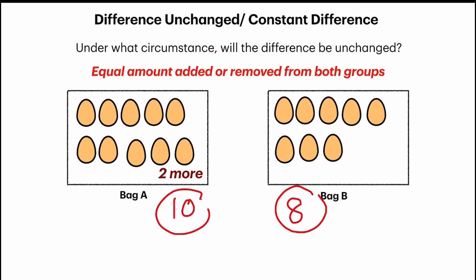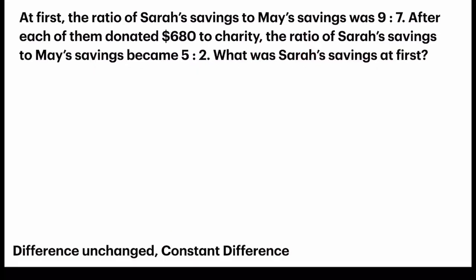So how are we going to use this concept to solve ratio word problems? Let's try one now. At first, the ratio of Sarah's savings to May's savings was 9 to 7. By looking at the ratio, we know that Sarah has a bit more money than May — to be exact, two units more.